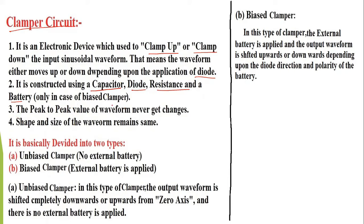The third important thing is that the peak-to-peak waveform value never gets changed. For example, if input is +5V to -5V, the peak-to-peak value is 10V, and output will also have 10V peak-to-peak. The shape and size of the waveform remain the same - only it gets an additional shift upward or downward direction.